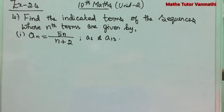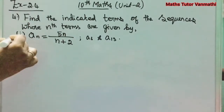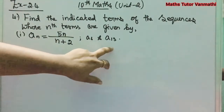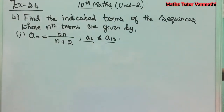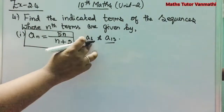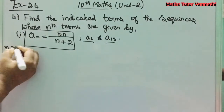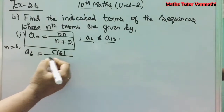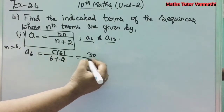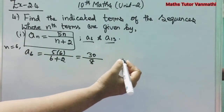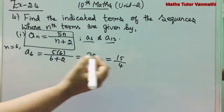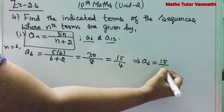Exercise 2.4, fourth problem: Find the indicated terms. The general term is a_n = 5n / (n+2). We are going to find a_6 and a_13. For n = 6: a_6 = 5×6 / (6+2) = 30/8 = 15/4.